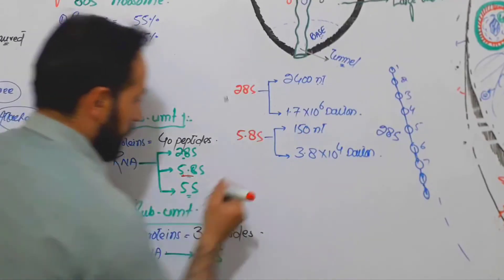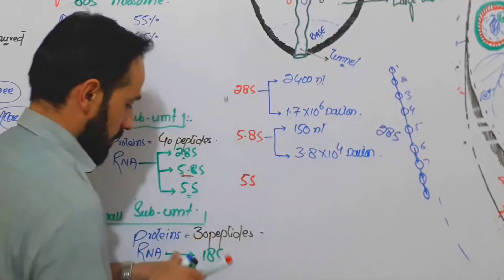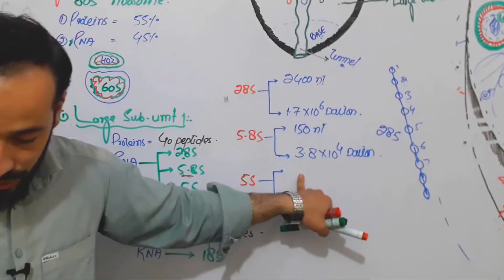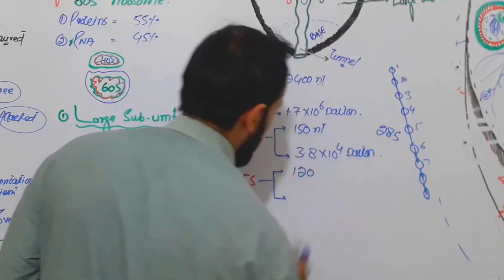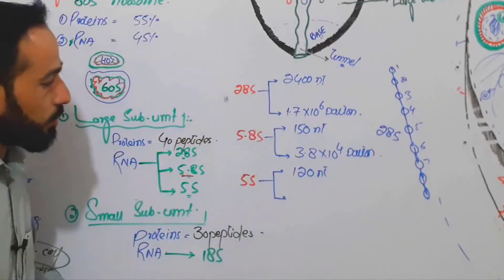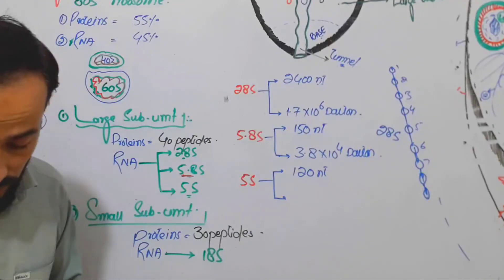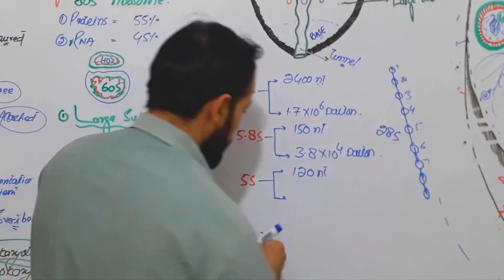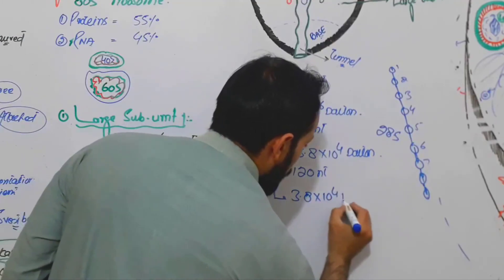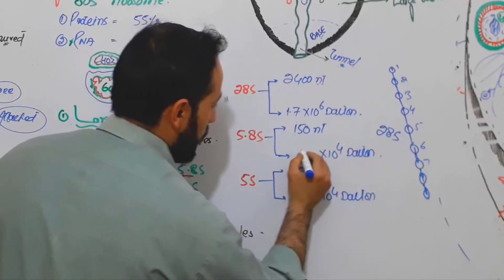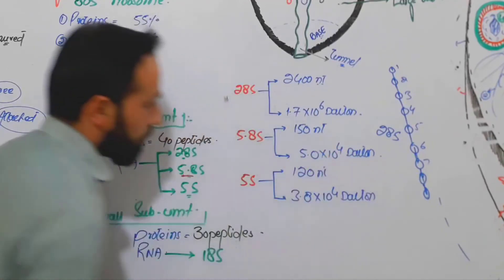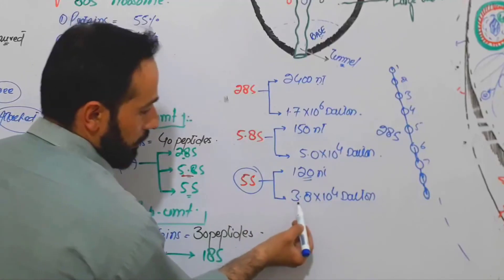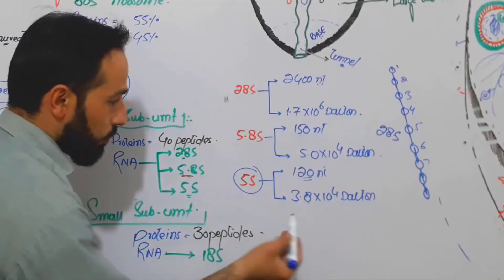And the last RNA in the large subunit, the 5S RNA: it contains 120 nucleotides. The molecular weight of those nucleotides — correcting our earlier figure — is 5.0 × 10⁴ Daltons. So in the case of the 5S RNA there are 120 nucleotides with a molecular weight of 3.8 × 10⁴ Daltons — correction, 5.0 × 10⁴ Daltons.